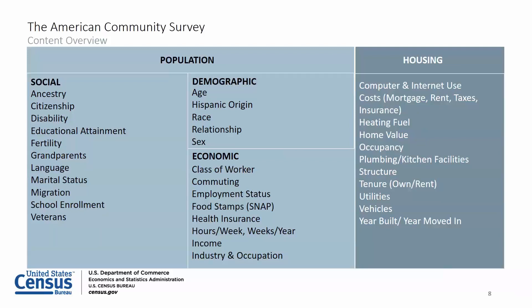The content collected by the American Community Survey can be grouped into four main types of characteristics: social, demographic, economic and housing. Social characteristics include topics such as education, marital status, fertility, veterans, disability status and place of birth. The ACS also collects basic demographic characteristics such as sex, age, race and Hispanic origin — the same information collected on the decennial census. Economic characteristics include employment status, income, commuting to work, occupation, industry and health insurance. Housing characteristics include tenure, home value, housing costs, utilities, plumbing and kitchen facilities.